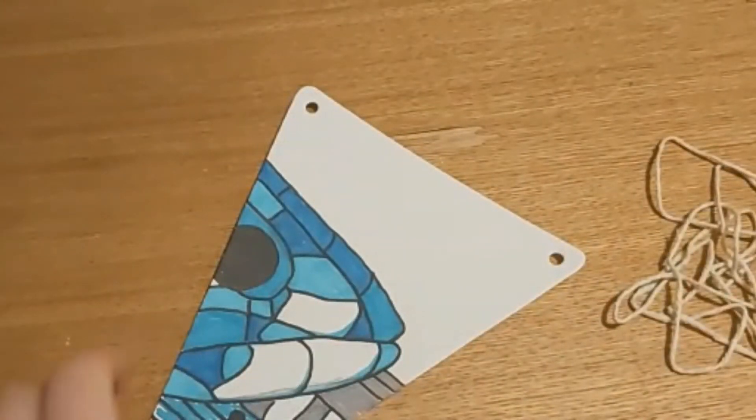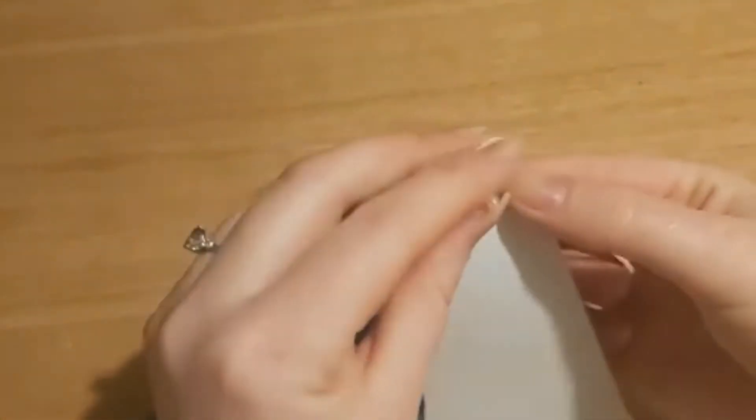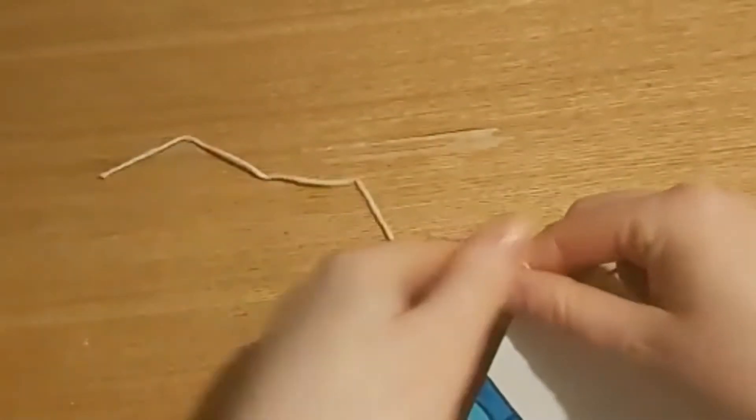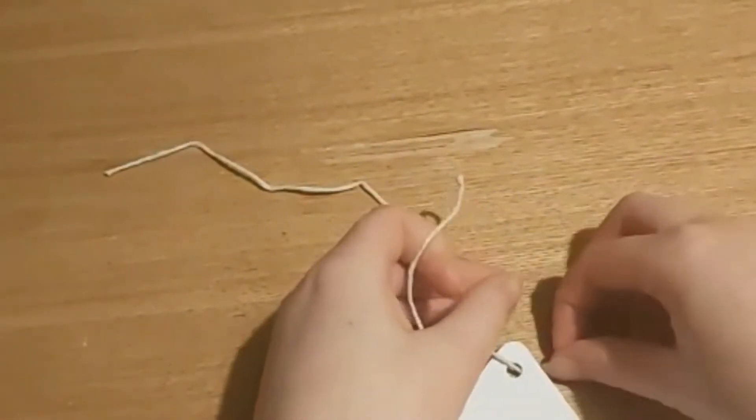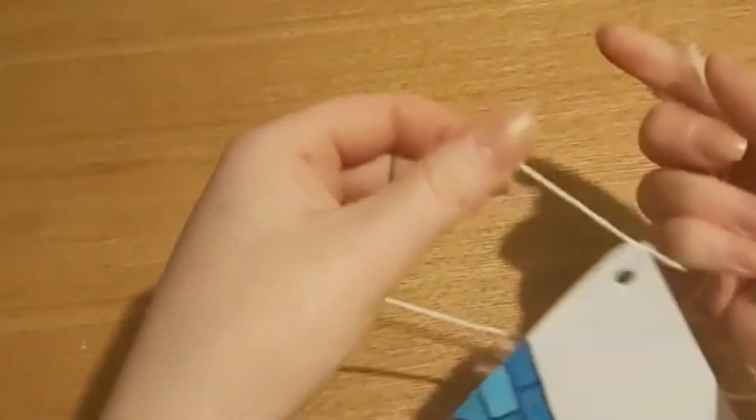So to start off your bunting you're going to get your first piece of card and you're going to get your string and you're going to tie your string to this side here. You're just going to loop it through first and just give a bit of leeway on the side. We're going to use that to stick it to the wall and then you're just going to pop a wee knot in this just so that it sticks in place.